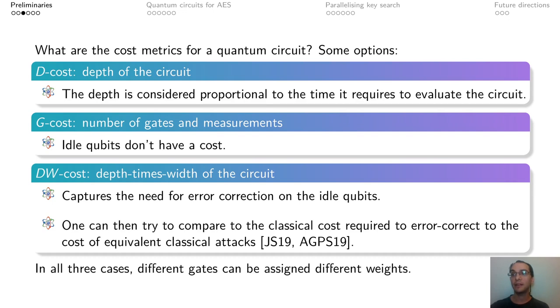In all three cases, different weights can be assigned to different gates. In particular, if we look at the Clifford plus T universal set of quantum gates, T gates are considered to be more expensive to prepare than Clifford gates.